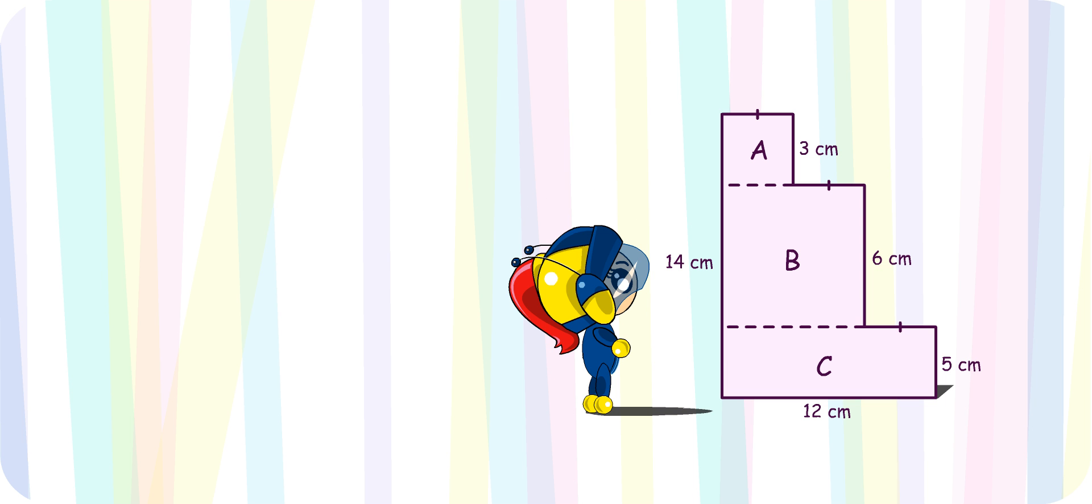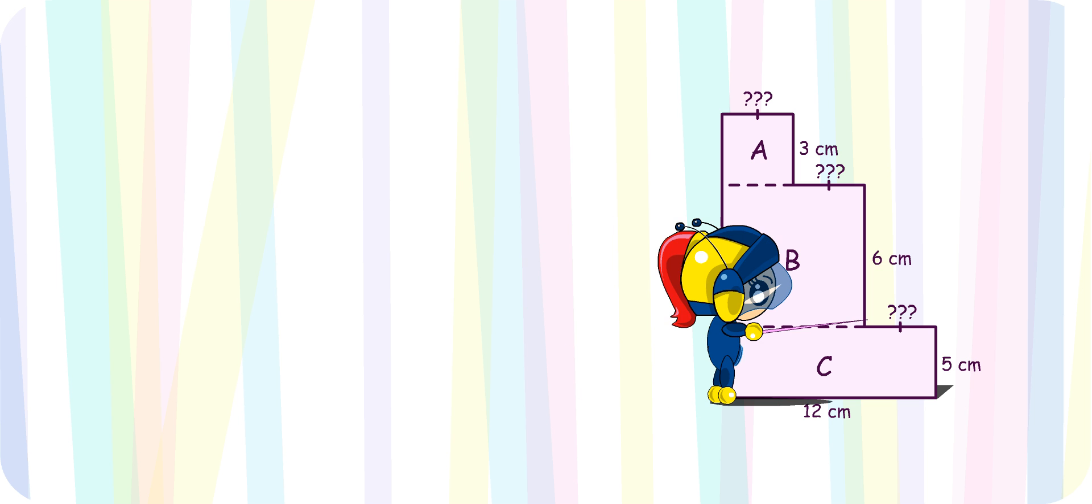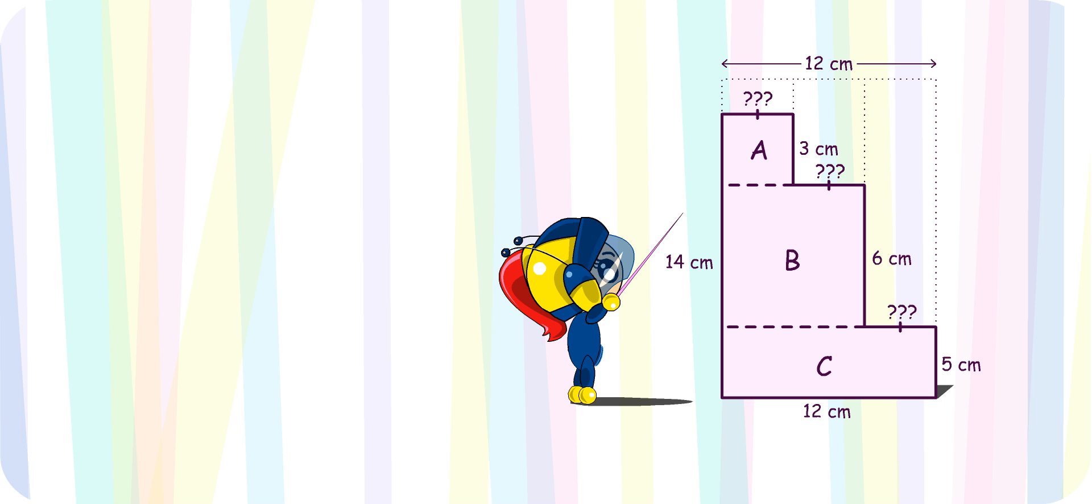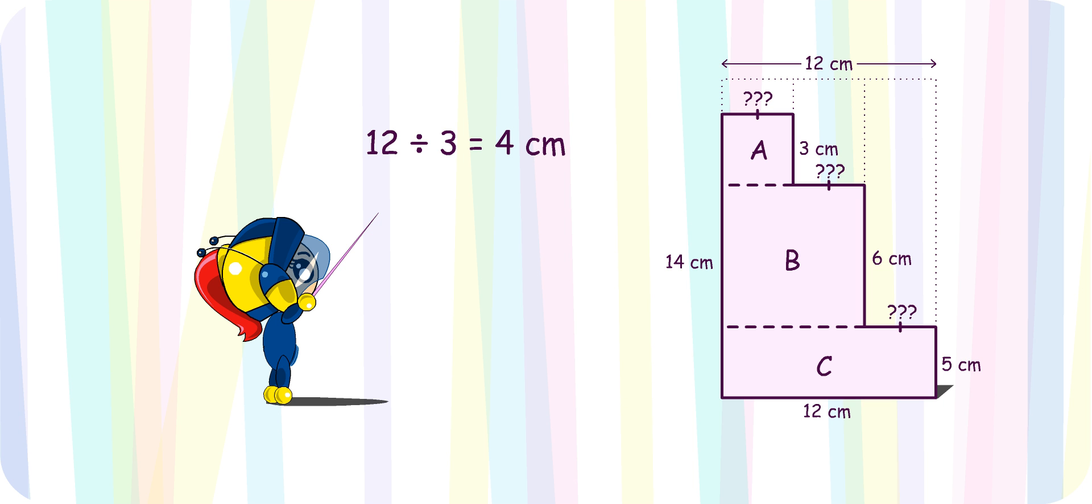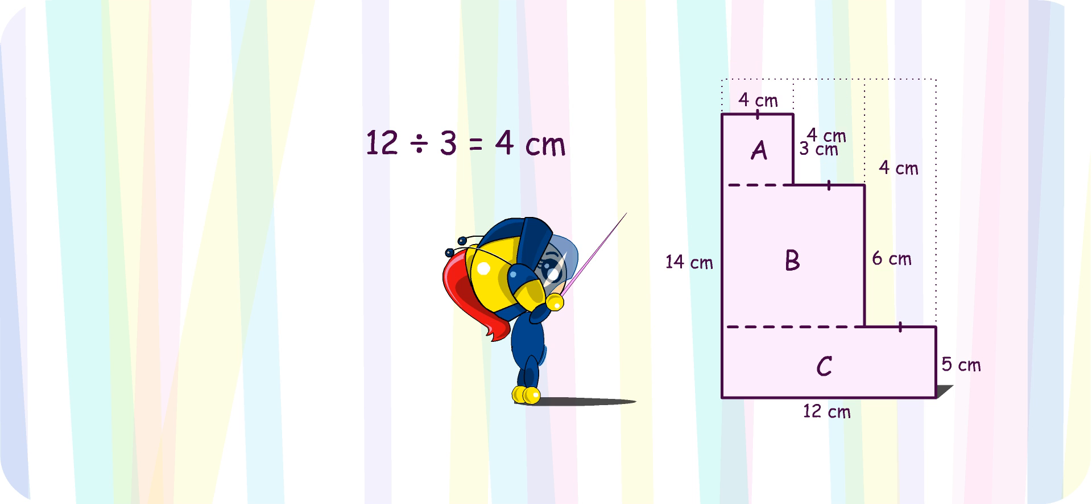Firstly, I have to find the length of these three unknown sides. Since they are equal in length and add up to 12 cm, each side is 12 cm divided by 3, which is equal to 4 cm.